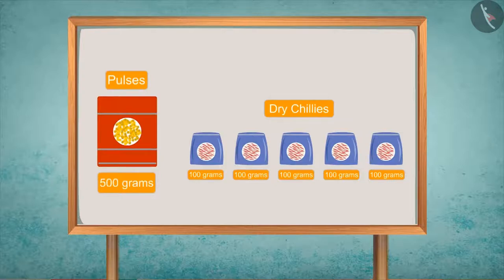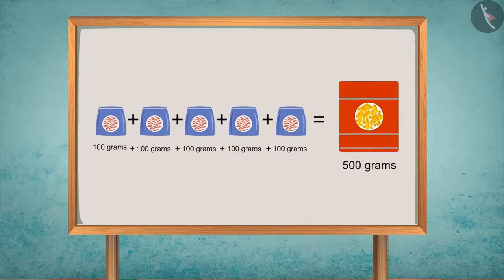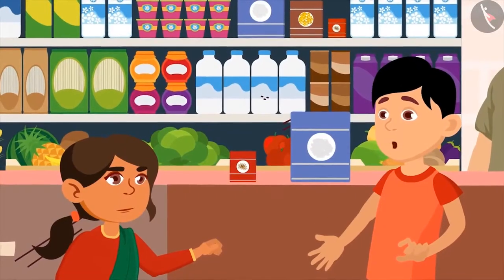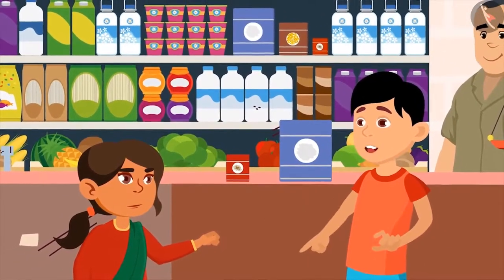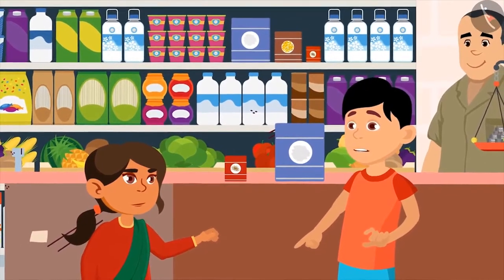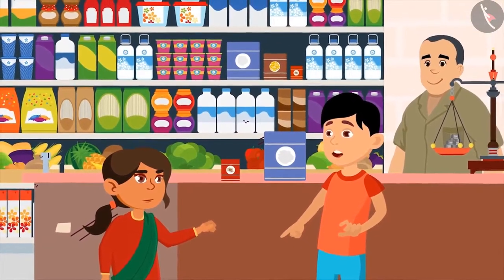You said it right. Dry chilies are lighter than pulses, so 5 packets of 100 grams of dry chilies is equivalent to 1 packet of 500 grams of pulses. On adding 5 packets of 100 grams, we get 500 grams — that is why both of them are equal. While comparing the weight of items, it doesn't depend on the number of items; instead, it depends upon the measuring units of weight.